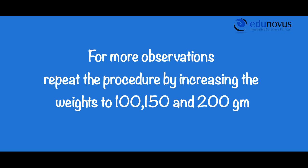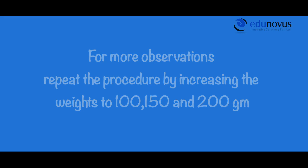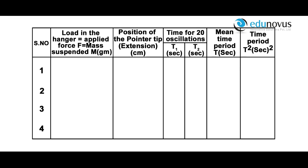For more observations, repeat the procedure by increasing the weight to 100, 150, and 200 grams. In each case we calculate the time period T and the square of the time period. For a load of 50 grams, the position of the pointer is 8 centimeters. T1 is 12 seconds and T2 is 13 seconds, therefore the mean time period T is 12.5 seconds.